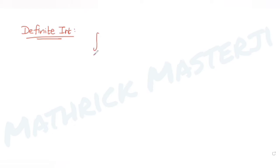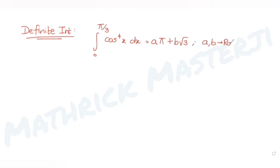Today's question is from the topic of definite integration. The question tells us: if the integral from 0 to π/3 of cos⁴(x) dx equals aπ + b√3, where a and b belong to rational numbers, then find the value of 9a + 8b.